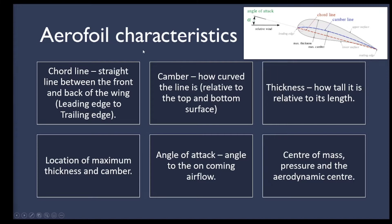Some airfoil terminology: the chord line is the most straightforward — a straight line from the leading edge at the very front to the trailing edge at the very back, shown as the red line. Camber is how curved the line is — equidistant from top and bottom — shown as the blue line. A zero-cambered airfoil is one where the camber line is completely straight, the same as the chord line.